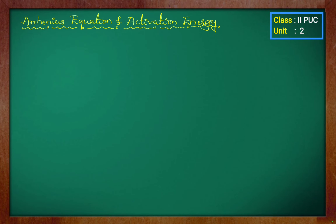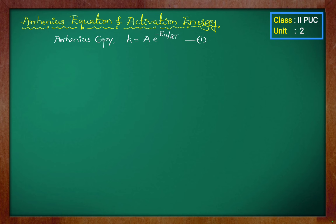Let us see how we can calculate activation energy by using the Arrhenius equation. The Arrhenius equation is k is equal to A into e to the power minus Ea divided by RT. Here, k is the rate constant, A is the Arrhenius constant or pre-exponential factor, Ea is activation energy, R is the gas constant, and T is temperature.